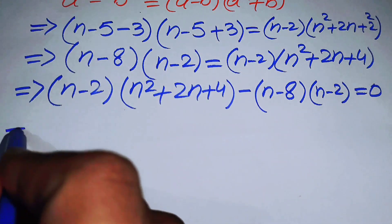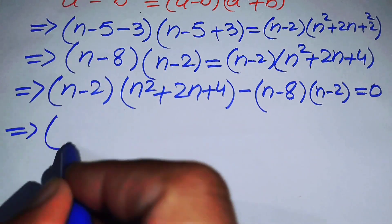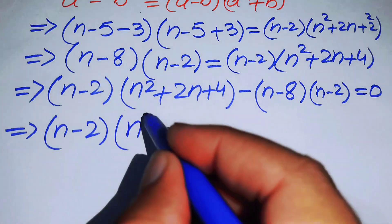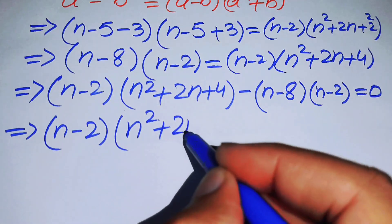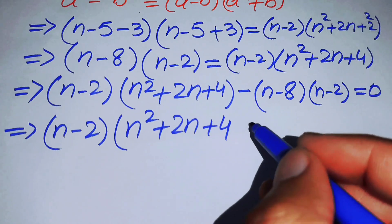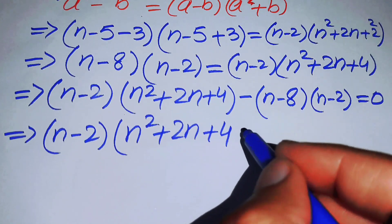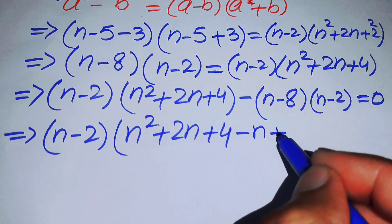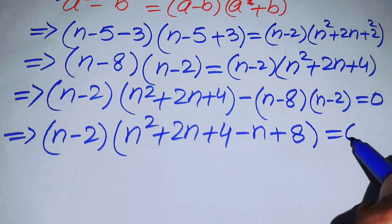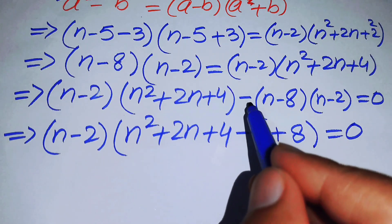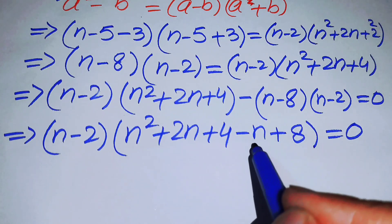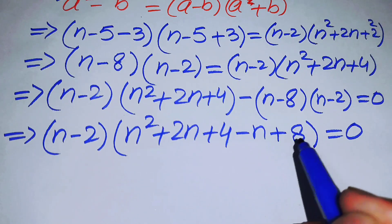We can see that (n - 2) is a common factor on both terms. Taking (n - 2) out as common gives: (n - 2)[(n² + 2n + 4) - (n - 8)] = 0, which simplifies to (n - 2)(n² + 2n + 4 - n + 8) = 0.